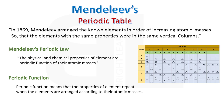Periodic function means that the properties of elements repeat when the elements are arranged according to their atomic masses. Hence, Mendeleev arranged his periodic table on the basis of increasing atomic masses.